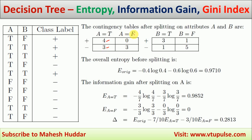When A is equal to false, how many positives are there? There are three false examples and all three are negative examples only. So zero positive examples and three negative examples in this case.